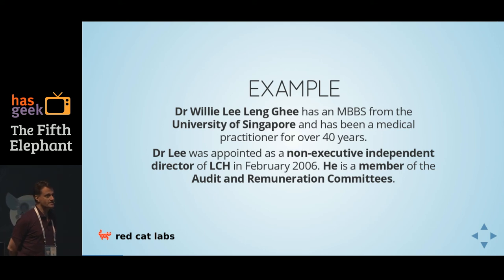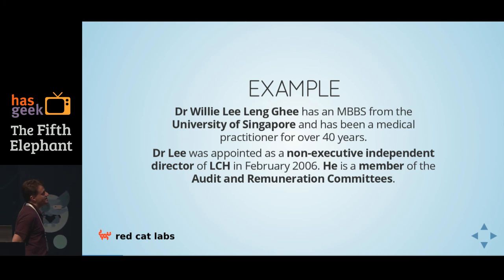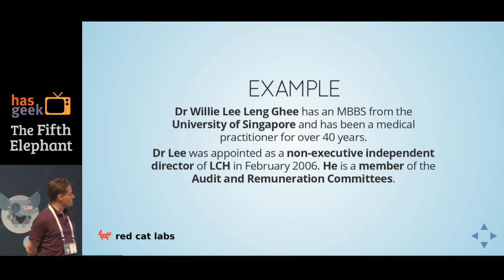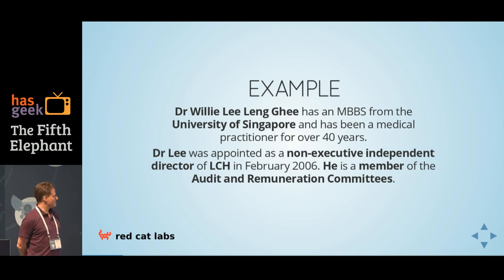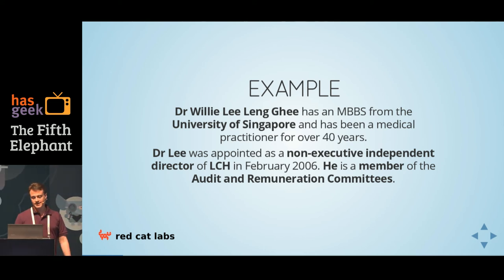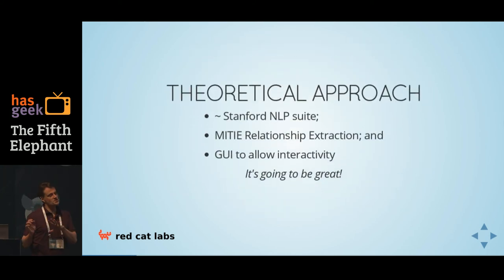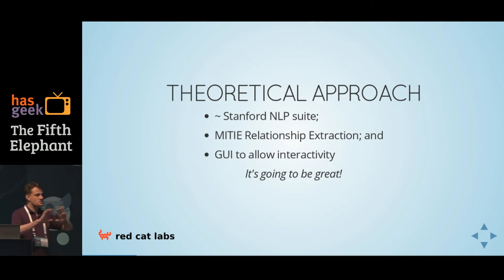Here's an example of the text they're going to look at. It looked pretty easy when they started out. There's Dr. Willie — this guy is obviously a person, there's where he studied, a simple tuple. Dr. Lee was appointed a non-executive independent director, which sounds like a relationship with a company. And he's a member of something. It looks like there are some tuples in here, it should be easy enough. So theoretically we'd get the Stanford NLP suite, do some relationship extraction, have a GUI so everyone can fix it up, and it's going to be great.